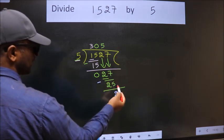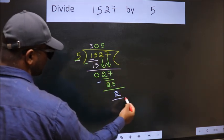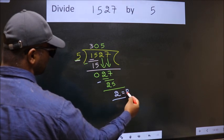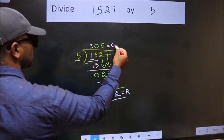No more numbers to bring it down. So we stop here. This is our remainder. And this is our quotient.